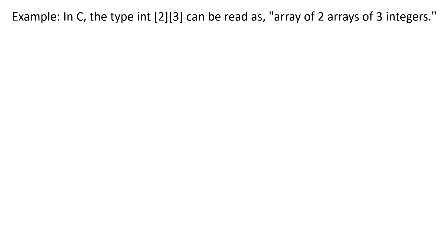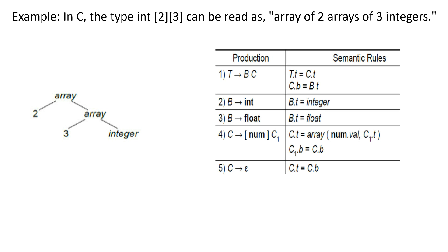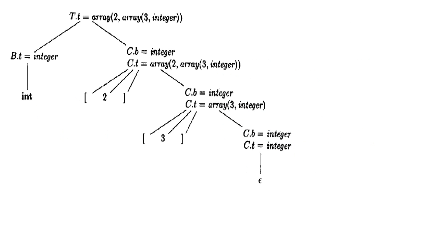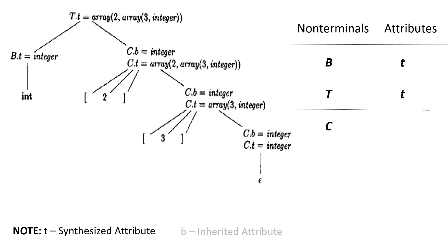The corresponding type expression is represented by this tree. Given this set of productions and semantic rules, we now get these. The non-terminals B and T have a synthesized attribute which is the letter t, while the non-terminal C has two attributes: an inherited attribute b and the synthesized attribute t.